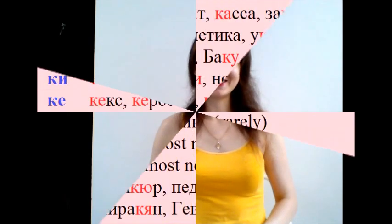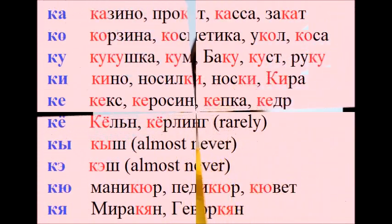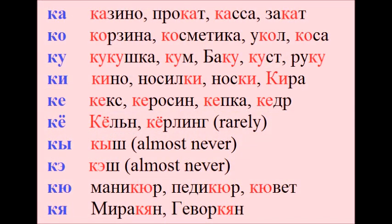Good, now let's listen carefully to all the syllables with the consonant Ka. Ka – казино, прокат, касса, закат.